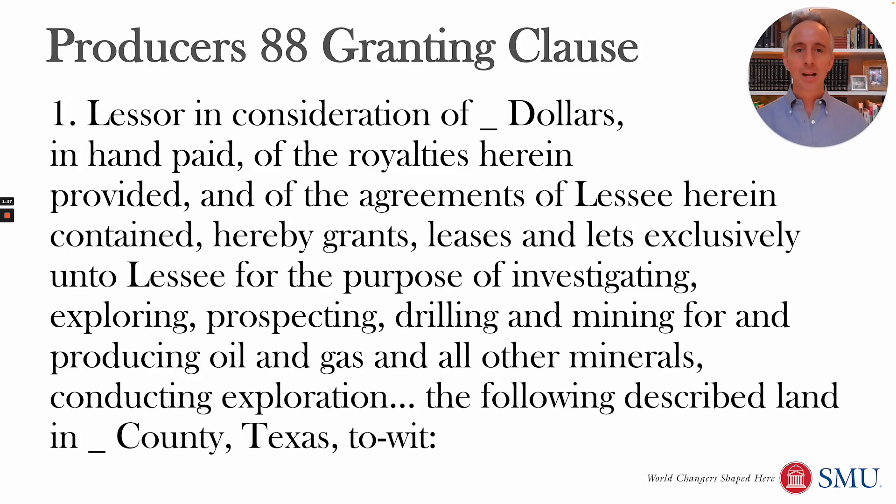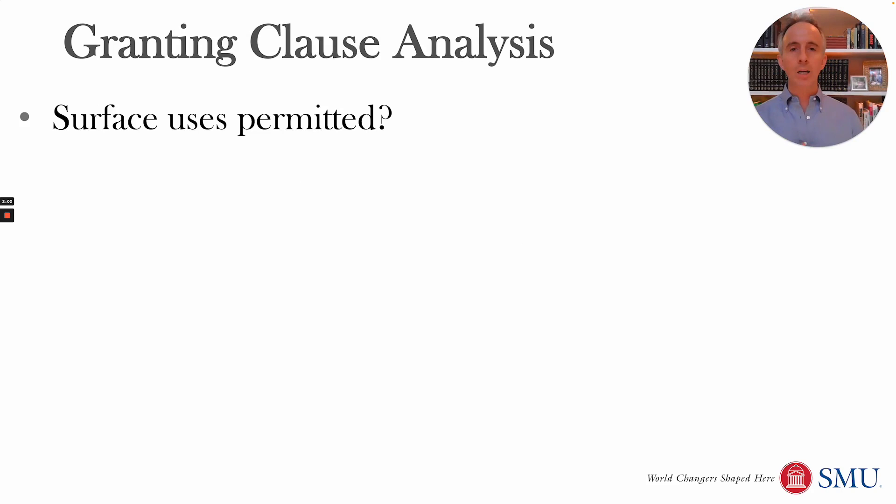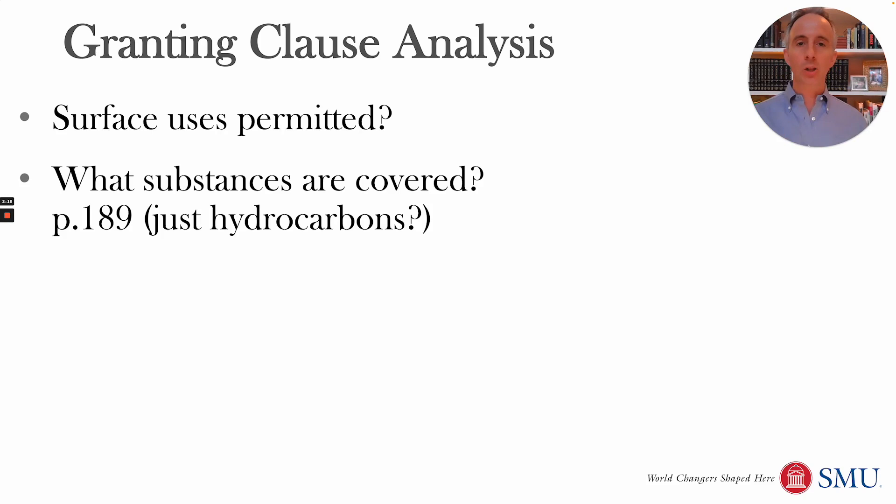When you look at the granting clause, you want to look at what kind of surface uses are permitted. There will typically be a lot of things listed. Some of those would be implied even if they weren't listed, like the right to explore or the right to produce oil and gas. But you want to look for anything in particular that changes what you would normally imply about the oil and gas company's rights.